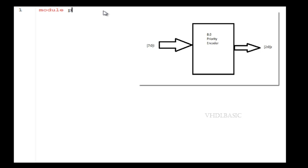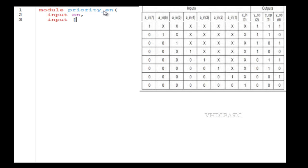Welcome to VHDL basics. Today we are going to see about priority encoder. In this example it is a 3-to-8 priority encoder. This is the block diagram - the priority encoder input is 8-bit and the output is 3-bit width. This is the truth table of the priority encoder. An encoder is nothing but coding the input into another format.